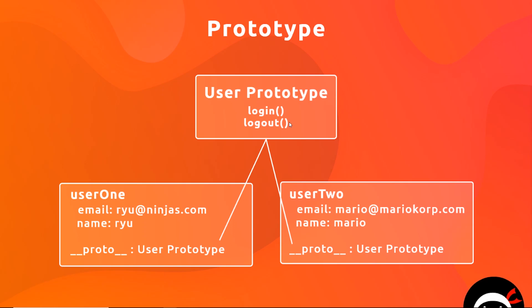This way, the methods are not being repeated over and over in each different user instance. We're not hard-coding those into each instance; instead we define them once on a single user prototype, and when a user object wants to use that method it will know how to do that because its proto property points to the user prototype. We're borrowing these methods from the prototype rather than having them stored directly on the objects. This is more efficient and will allow us to work with prototype inheritance later.